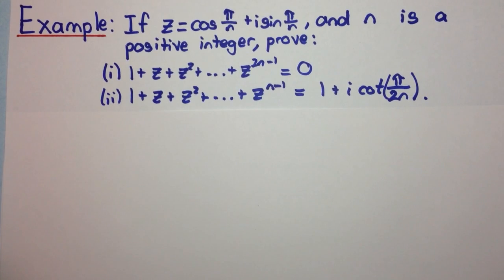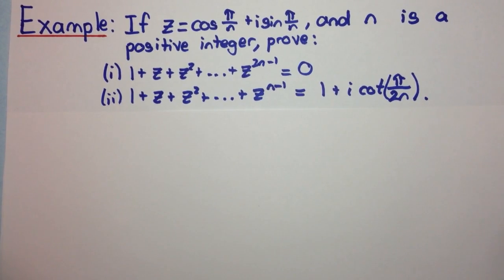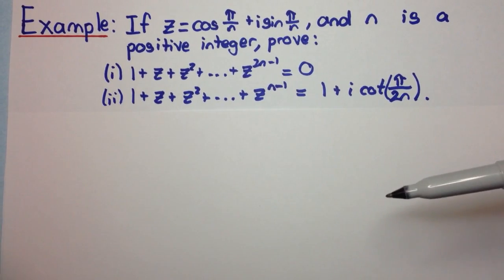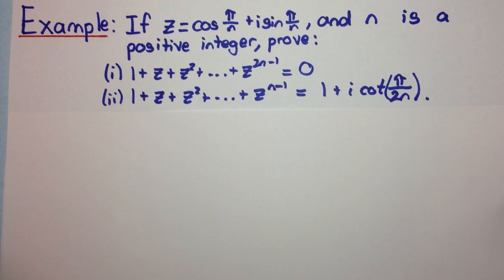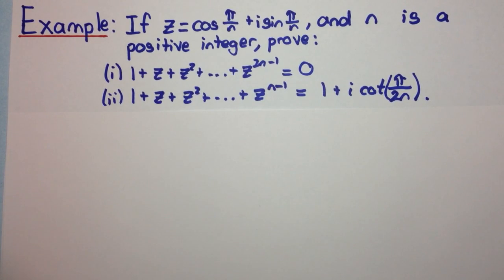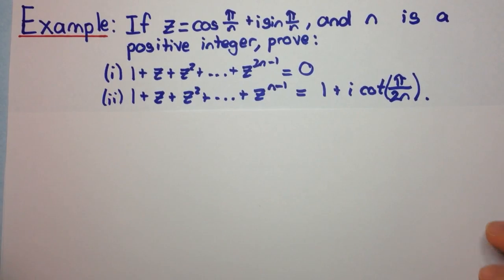That's part 1. And part 2, a similar thing: 1 + z + z² + ... + z^(n−1) is equal to 1 + i·cot(π/2n). Let's have a look at the first one.